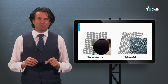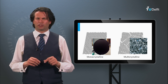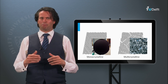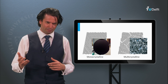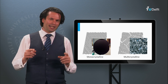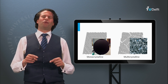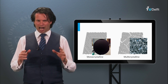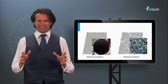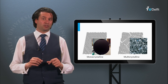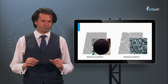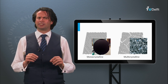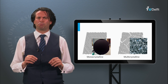We have various types of silicon wafers such as monocrystalline silicon and polycrystalline silicon. In this block I will give an answer to the question: how do we make these various types of silicon? How can we make the silicon material pure?